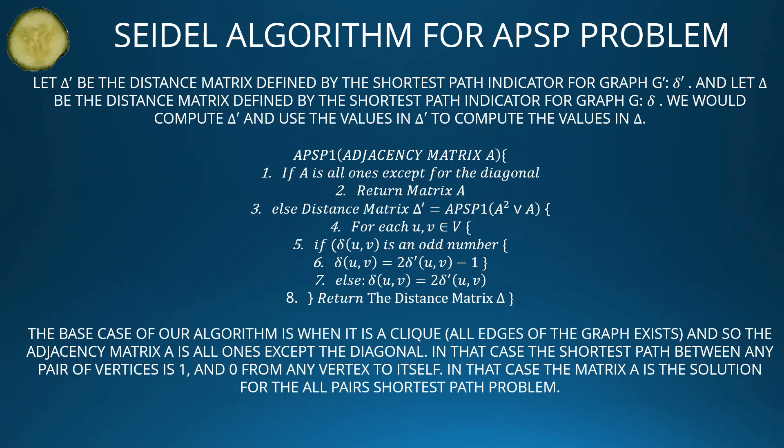Continuing APSP1: for each pair of vertices U, V in V, if δ(U, V) is an odd number, set δ(U, V) = 2·δ'(U, V) − 1; otherwise set δ(U, V) = 2·δ'(U, V). Then return the distance matrix δ. The base case is when the graph is a clique — all edges exist, so the adjacency matrix A is all ones except the diagonal, and the shortest path between any pair is 1 (or 0 from any vertex to itself).